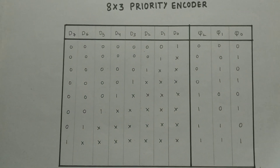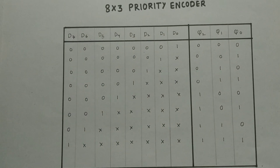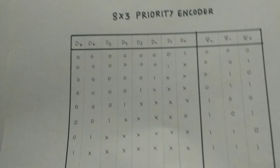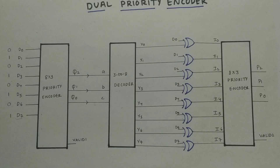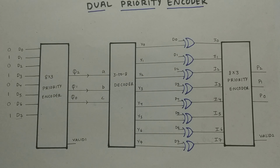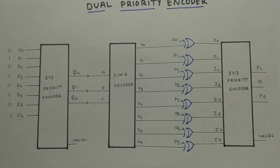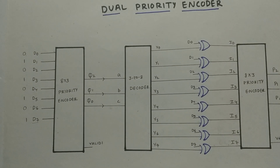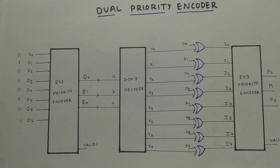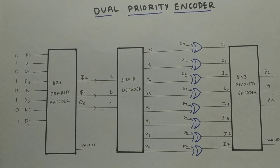So if you want to find out the second highest priority value, that can be done by using a dual priority encoder. A dual priority encoder not only identifies the highest priority but also finds the second highest priority. Now let us look at the working of a dual priority encoder by taking an example.